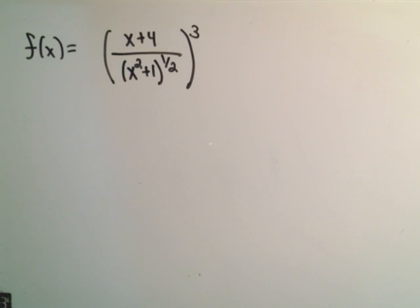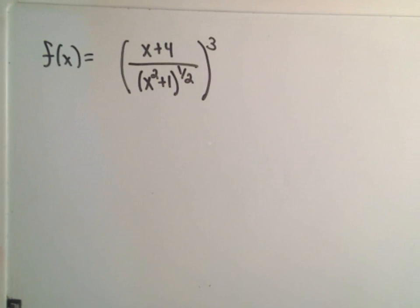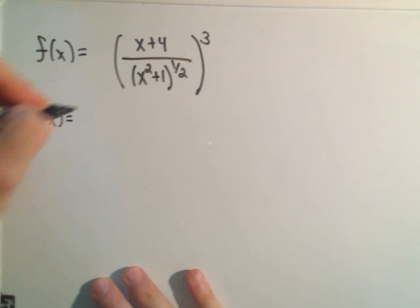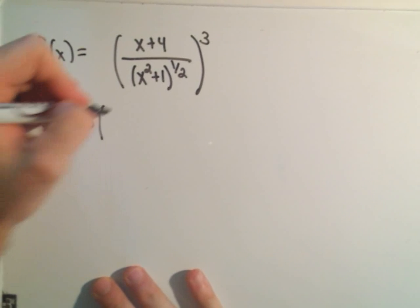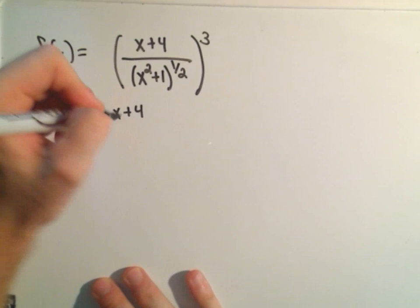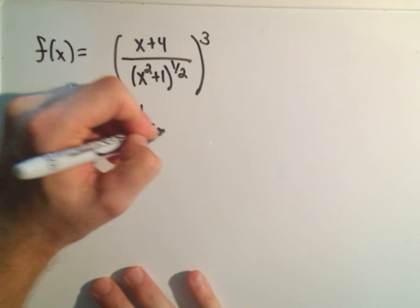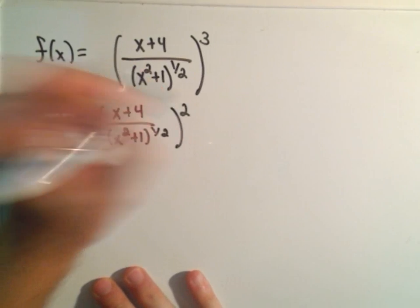The first thing I did was rewrite my square root as a one-half exponent because that way I can use it, it just reminds me to use the chain rule on it. Alright, so if I take the derivative it says the three comes out front. We leave the inside part alone and then we raise that to the second power.